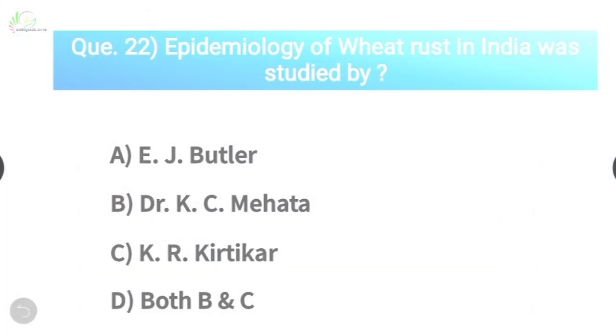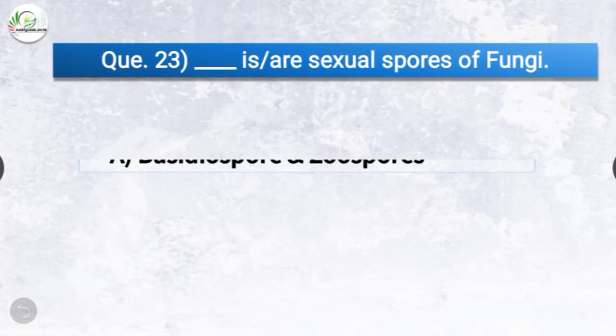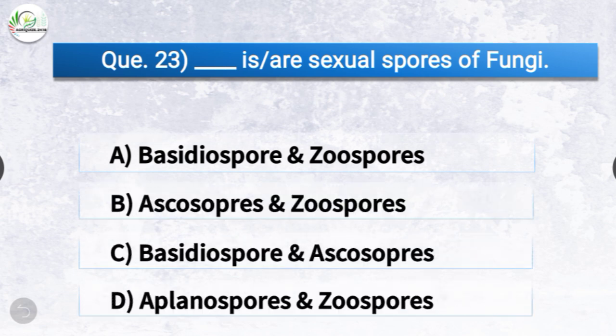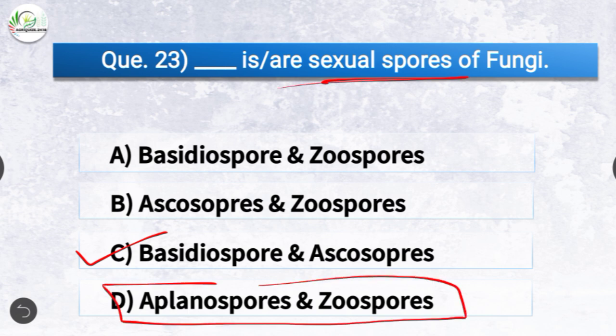Question number twenty-three: Dash are sexual spores of fungi. The options are basidiospores and zoospores, ascospores and zoospores, basidiospores and ascospores, or aplonospores and zoospores. The correct answer is option C, basidiospores and ascospores. These are sexual spores of fungi, whereas the asexual spores constitute aplonospores and zoospores.